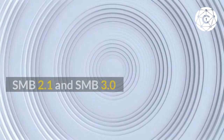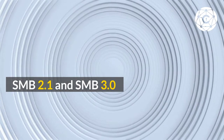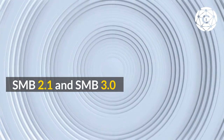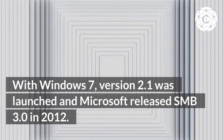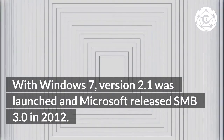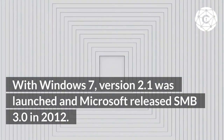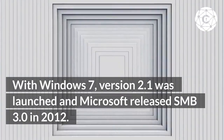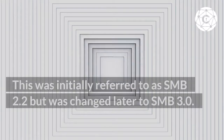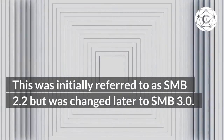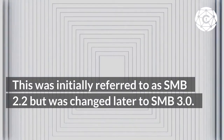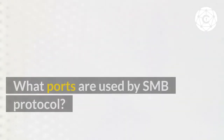SMB 2.1 and SMB 3.0: With Windows 7, version 2.1 was launched, and Microsoft released SMB 3.0 in 2012. This was initially referred to as SMB 2.2 but was changed later to SMB 3.0.